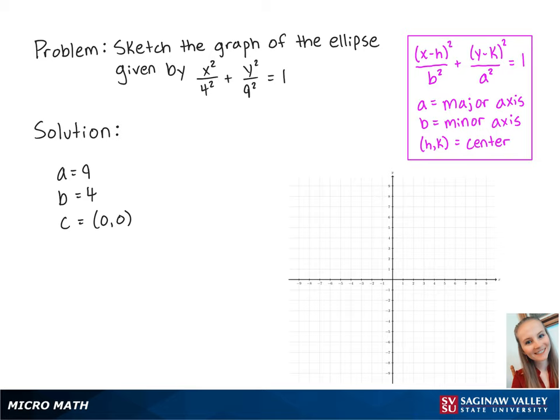The center is at 0, 0, and the major axis points will be 9 above and 9 below the center. So the first point will be at 0, 9, and the second at 0, negative 9.